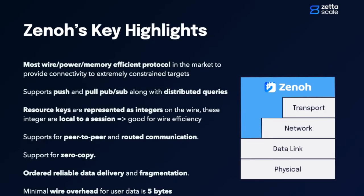In summary, Zeno is the most wire-efficient, power-efficient, and memory-efficient protocol available on the market. It gives you connectivity from the microcontroller up to the data center. It supports push and pull publish-subscribe along with distributed queries. It supports arbitrary topologies including peer-to-peer, routed, and brokered communication. It has support for zero-copy, which is very important when exchanging extremely large data on the same host, and it has built-in support for fragmentation as well as several different levels of reliability.